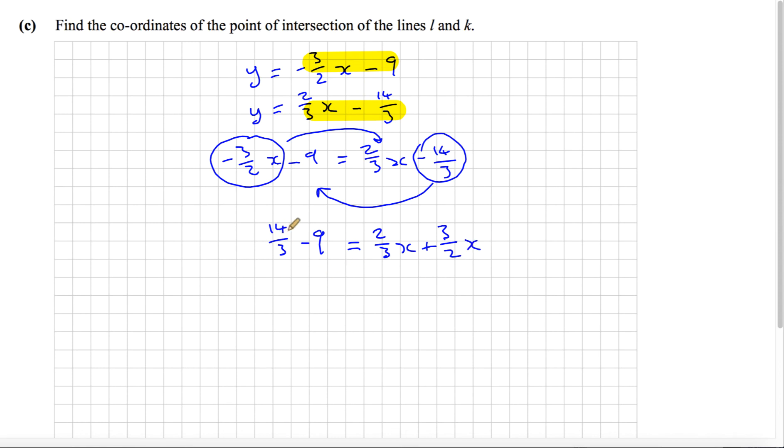We can do this on our calculators. 14 over 3 minus 9 gives us minus 13 over 3. On the right, 2 thirds x plus 3 halves x equals 13 over 6x.